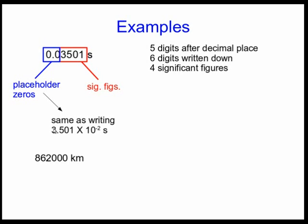I could have written 3.501 times 10 to the negative two seconds. And now it's clearer that there are four significant figures. In general, if you want to make it really clear how many significant figures you have in a number, you should write it in scientific notation.